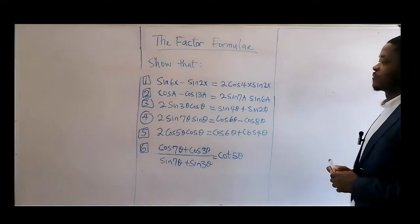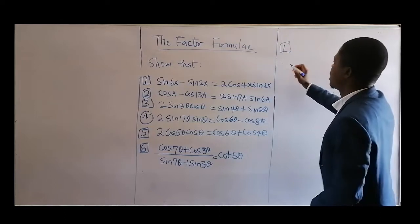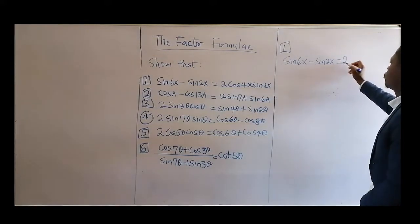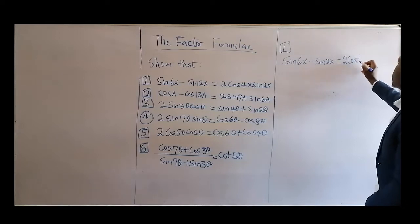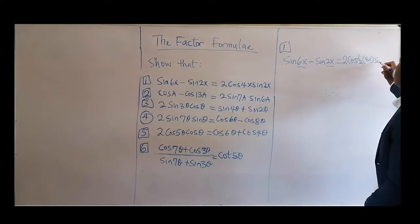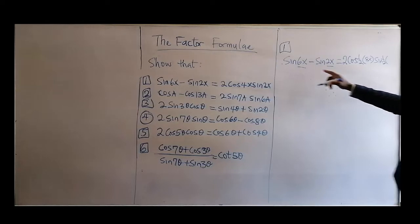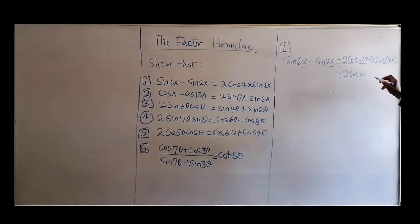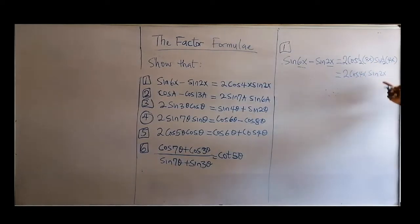I'm going to do it starting from both left to right and right to left, so you can choose the one you want. For question one, you have a sine subtraction, which will be 2 cosine of this plus this in the bracket, times this minus this — that's 4x — and that gives me 2cos(4x)sin(2x). Half of 4 is 2, so that one is done.